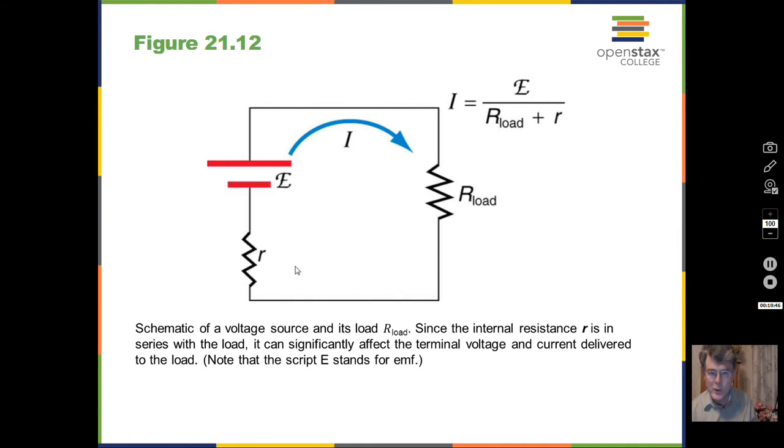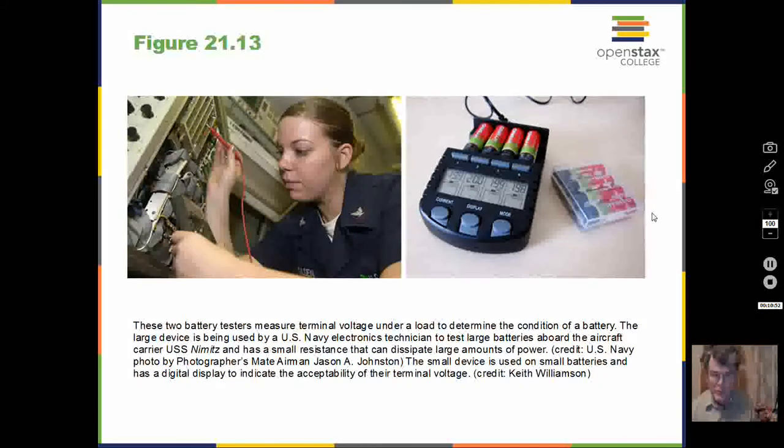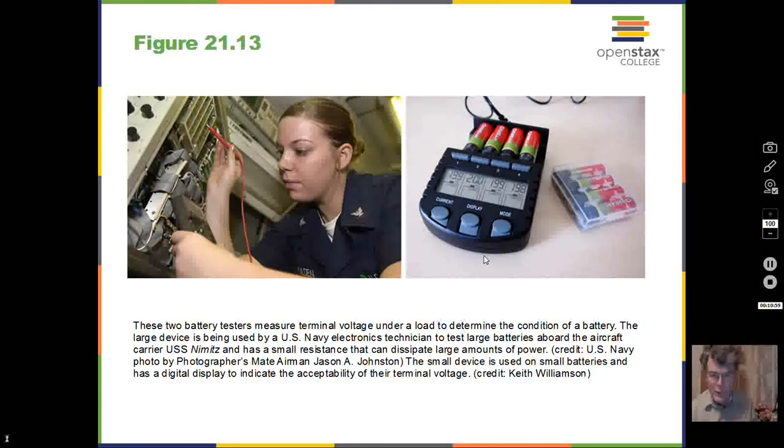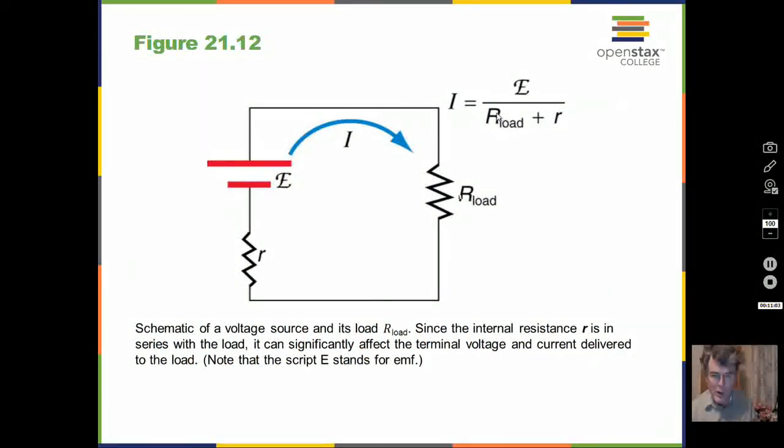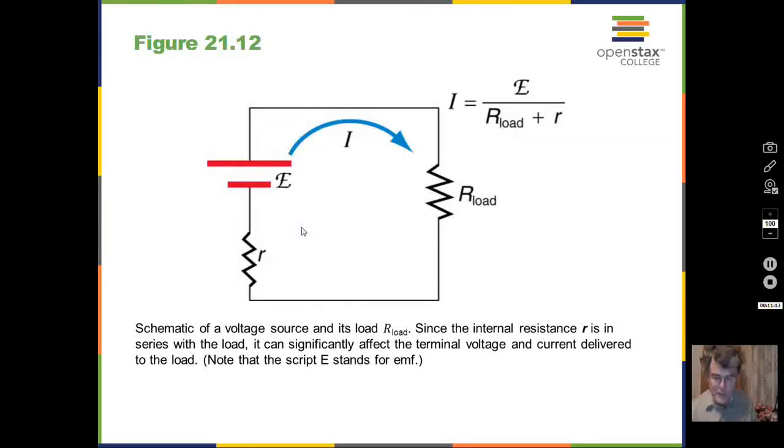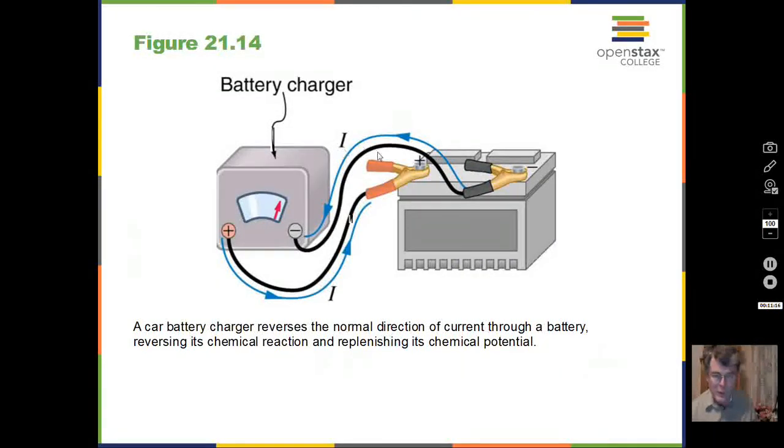We can test batteries. When batteries are tested they are taken under a load. We want to have a small r load here so we get significant current coming out, and that will tell us if there's a big voltage drop here that the battery is old, if r is large. So battery testers put the battery under a load. To recharge a battery we have plus terminal here, negative terminal here. Use caution in doing this. Read your owner's manual before attempting this, but you can recharge batteries and reverse the chemical reaction inside the battery.